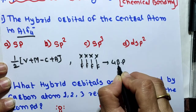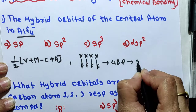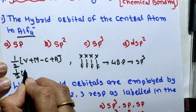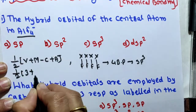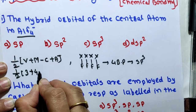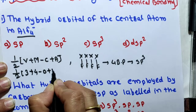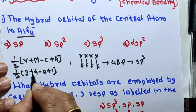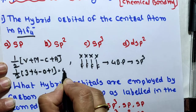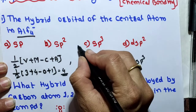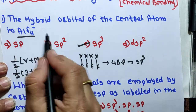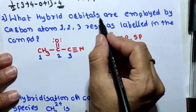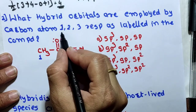Four fluorine atoms are present, giving four bond pairs with fluorine. The number of orbitals are four, so hybridization is sp³. We can also calculate using the formula: half into (valence electrons 3 + monovalent atoms 4 − cation 0 + anion 1) = (4 + 3 + 1) / 2 = 4. So AlF₄⁻ has sp³ hybridization.